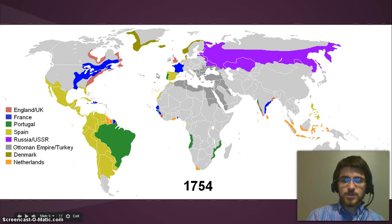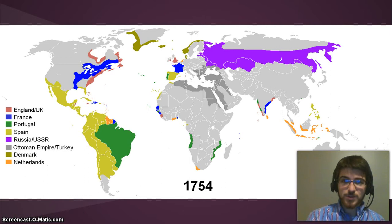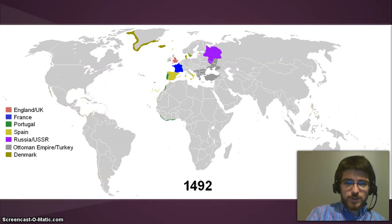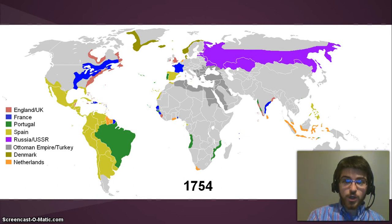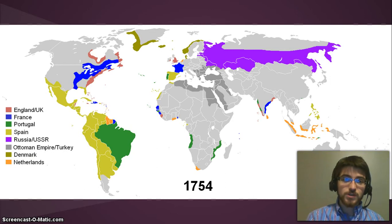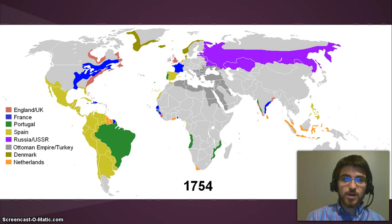Studying commerce during this time period is incredibly important — and look at your study guide, this is one of the answers — because from 1492 to 1754, Europe goes from owning a tiny part of the world to owning a huge chunk of all of the coastlines of the world, reaching into all of those countries too. This shows the beginnings of why Europe became the dominant force in the world.